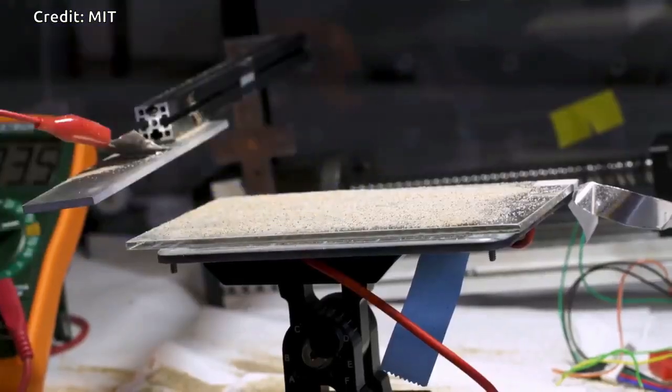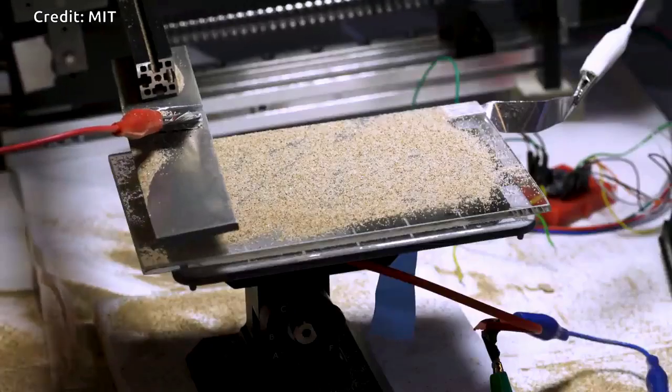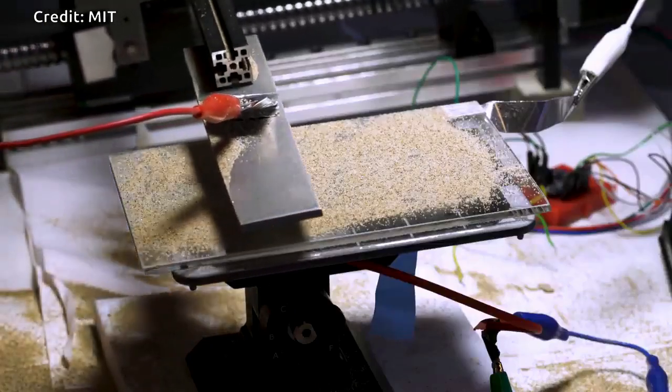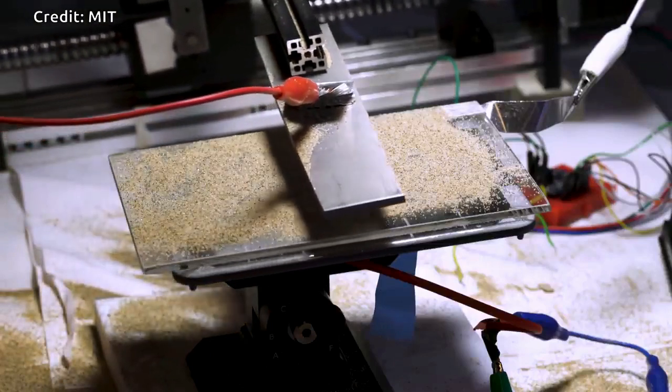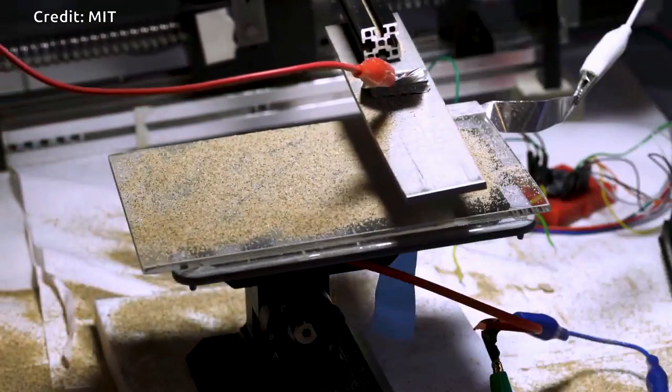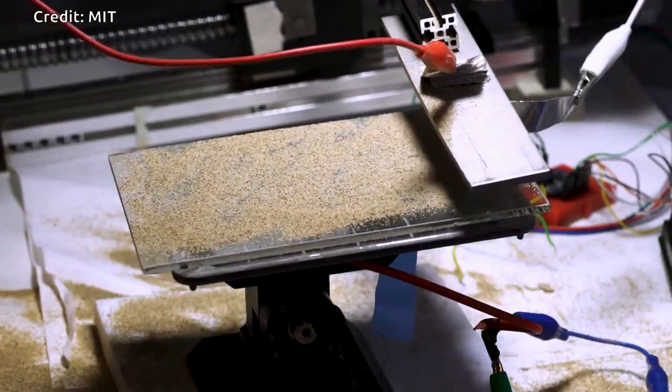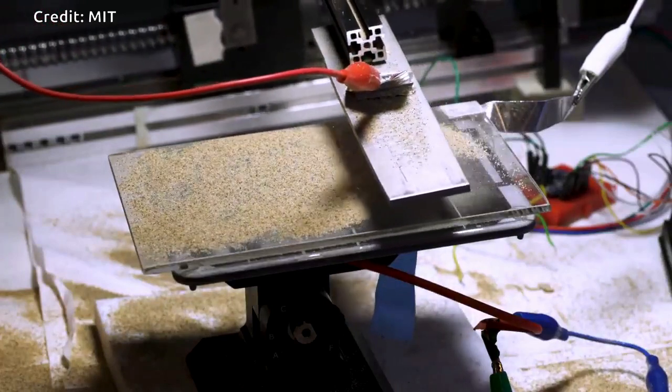Now, a team of researchers at MIT has devised a way of automatically cleaning solar panels – or the mirrors of solar thermal plants – in a waterless, no-contact system that could significantly reduce the dust problem.